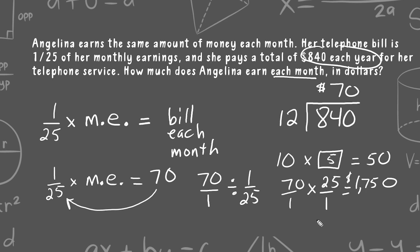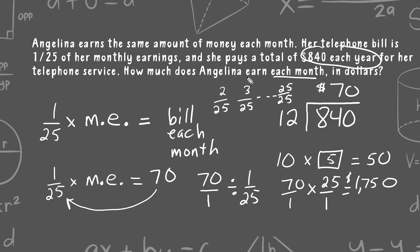Another simpler approach: take eight hundred forty dollars and divide by twelve to find she pays seventy dollars per month on her phone bill. We know that seventy dollars is one twenty-fifth of her monthly earnings. So two twenty-fifths would be double seventy, three twenty-fifths would be triple seventy, and all the way up to twenty-five twenty-fifths — meaning twenty-five groups of seventy. Therefore, we multiply twenty-five by seventy, which gives one thousand seven hundred fifty dollars.